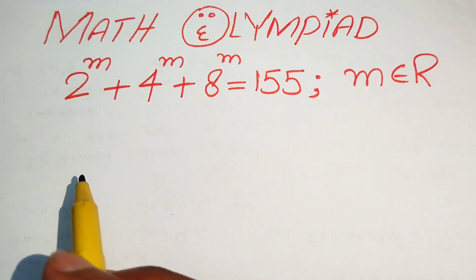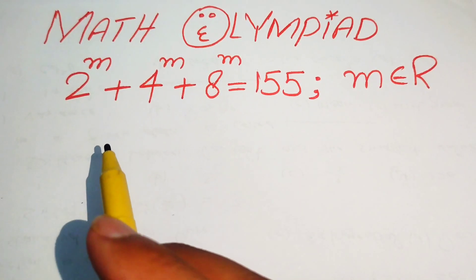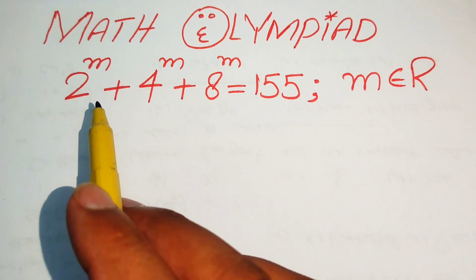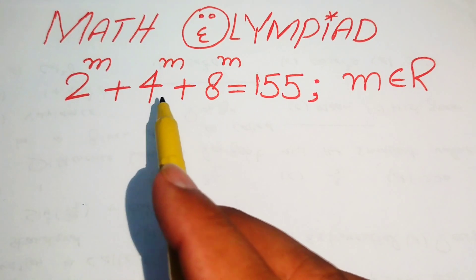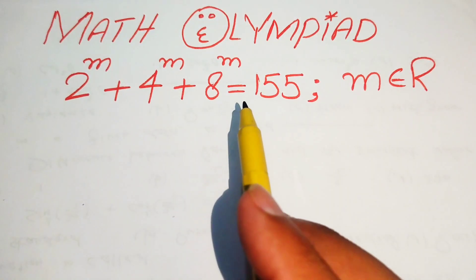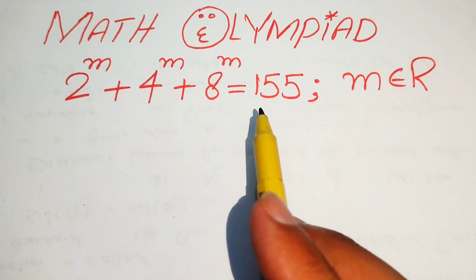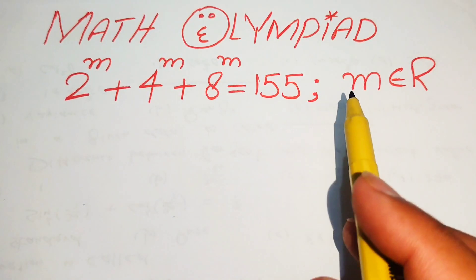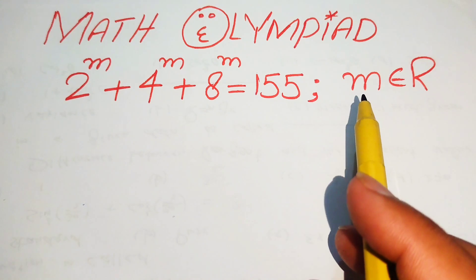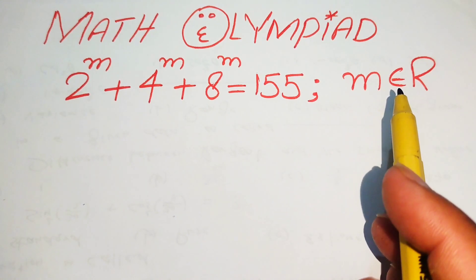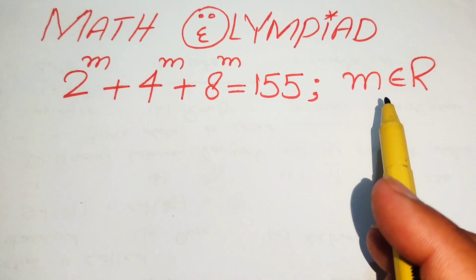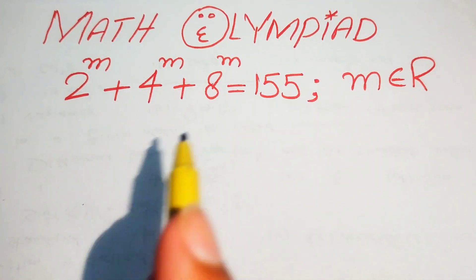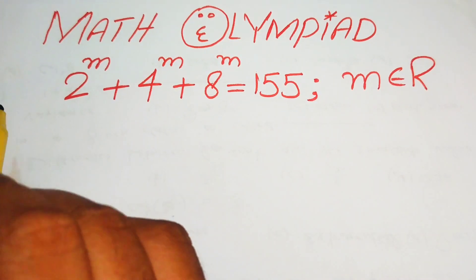Hello everyone, welcome. We are going to solve this exponential equation: 2 to the power of m plus 4 to the power of m plus 8 to the power of m equals 155. We will solve this problem for the values of m, where m belongs to the real numbers.